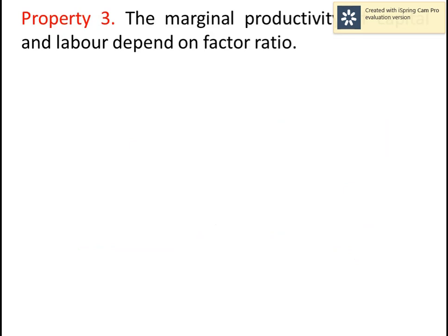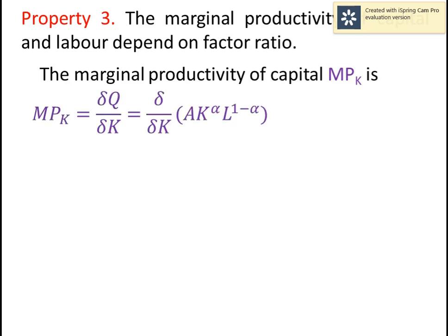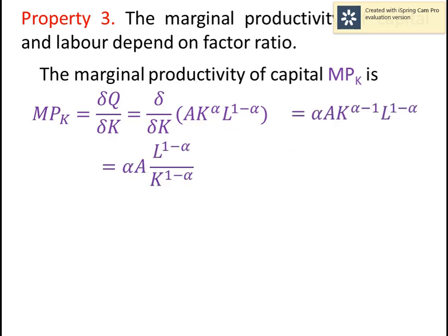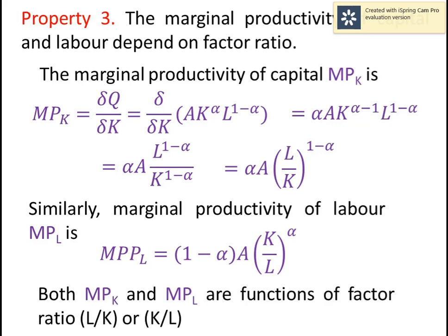The marginal productivity of capital and labor also depends on the factor ratio. The marginal productivity of capital, MPK, is the partial derivative of q with respect to k, which gives alpha*a*(l/k)^(1 - alpha). Similarly, the marginal productivity of labor, MPL, equals (1 - alpha)*a*(k/l)^alpha. So both MPK and MPL are functions of the factor ratio l/k or k/l.